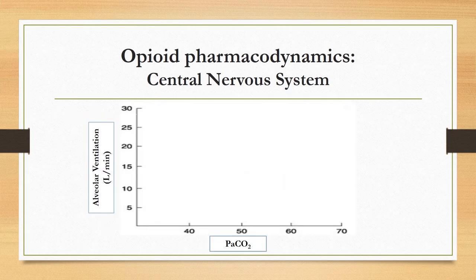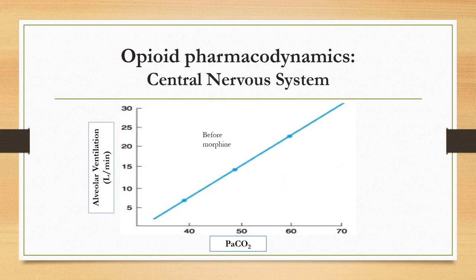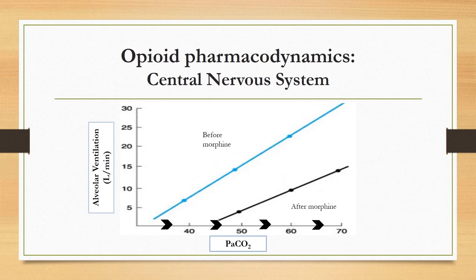This graph represents the relationship between opioid administration, PaCO2, and alveolar ventilation. Prior to opioid administration, normal ventilation is maintained in a balanced state — 50% of the graph is above and 50% below the baseline. When an opioid such as morphine is delivered, it increases PaCO2 and blunts the response to a CO2 challenge, shifting the CO2 response curve downward and to the right. Basically, the patient's apneic threshold rises and hypoxic drive is decreased.